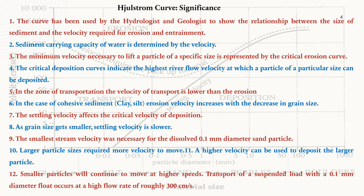The minimum velocity necessary to lift a particle of a specific size is represented by the critical erosion curve. The critical deposition curve indicates the higher river flow rate at which a particle of a particular size can be deposited. In the zone of transportation, the velocity of transport is lower than the erosion velocity. For cohesive sediment, erosion velocity increases with a decrease in grain size.